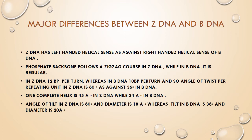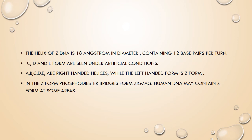The angle of tilt in Z-DNA is 60 degrees and the diameter is 18 angstrom, whereas the tilt in B-DNA is 36 degrees and the diameter is 20 angstrom. The Z-DNA helix is 18 angstrom in diameter containing 12 base pairs per turn. C, D, and E forms are seen only under artificial conditions. A, B, C, D, and E are all right-handed helices, while the left-handed helix is the Z form. In the Z form, the phosphodiester bridges form a zigzag pattern. Human DNA may also contain the Z form in some areas.